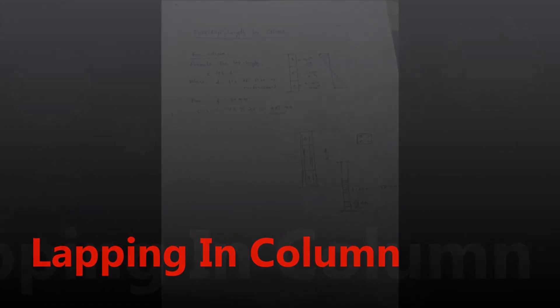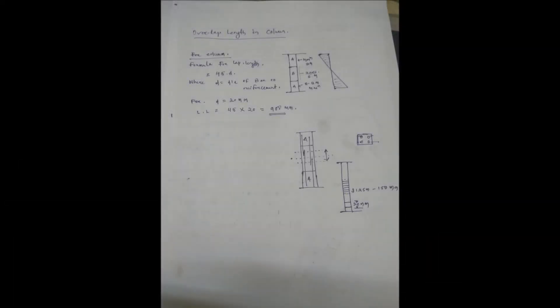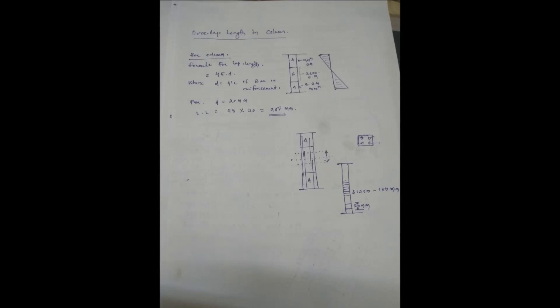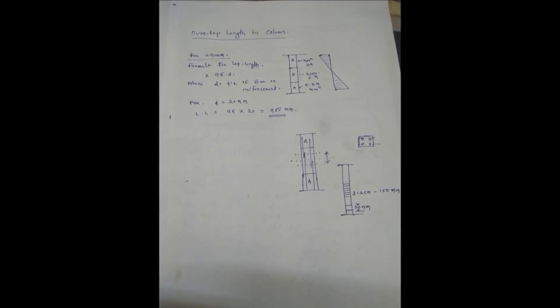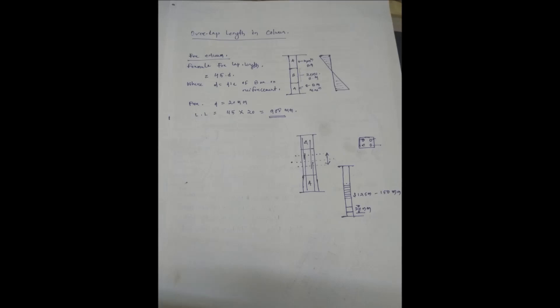Now comes to how to get overlap length in column and the best position in column for lapping. In this figure we can see this is a column and if you draw the bending moment diagram of the column, we can see at the center is the point of contraflexure where the bending moment is equal to zero. From the center towards support the bending moment increases and the zone near the support acts like a tension zone.